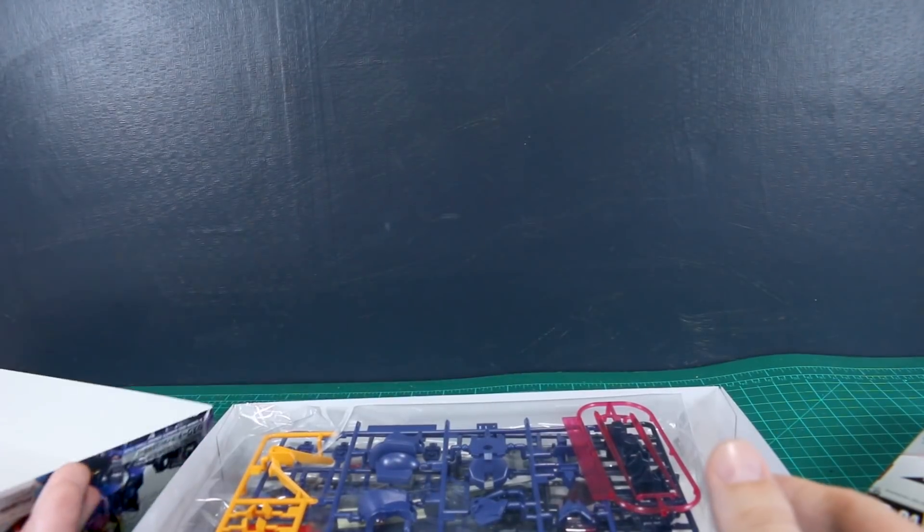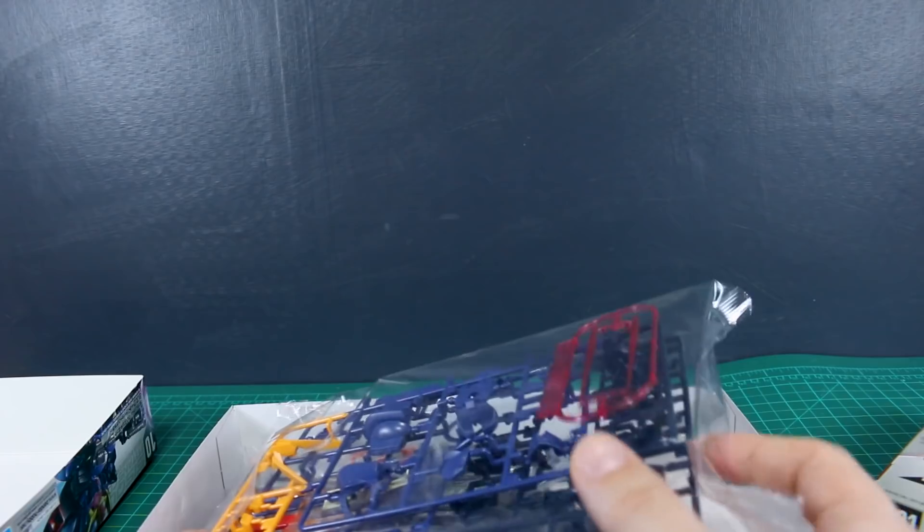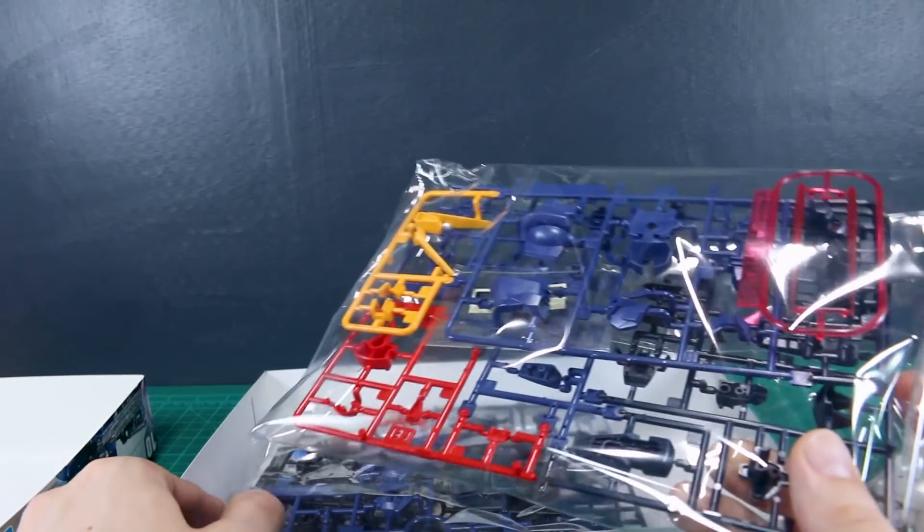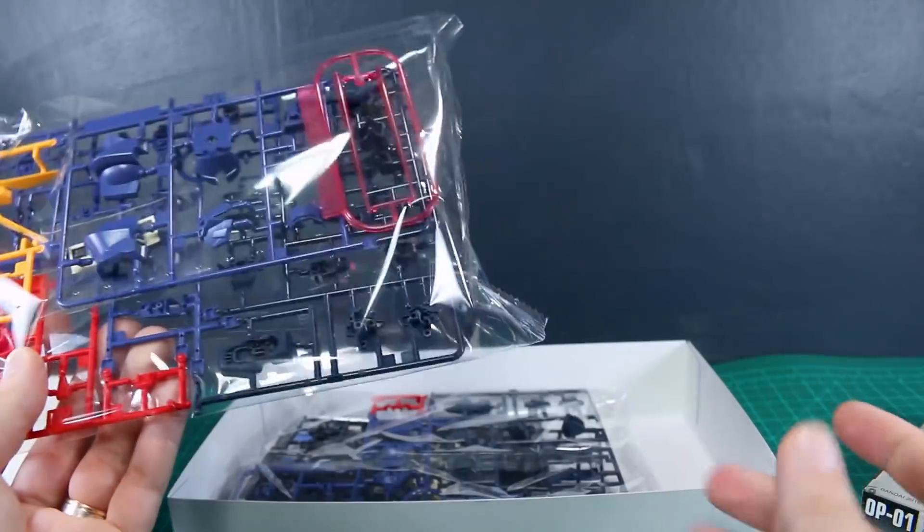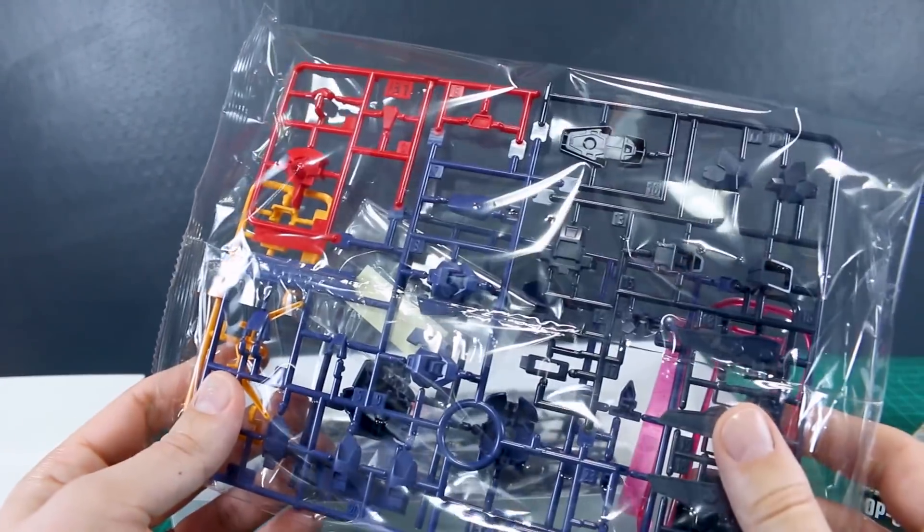And then the list price for this was originally 1,400 yen. So a little bit more on the expensive side. Some of the other ones in the line were coming out around 1,000 or 1,200 yen. This one's a little bit more expensive, but again, it does have a good amount of parts in there for all the parts for the backpack and then the big giant gun and all that.